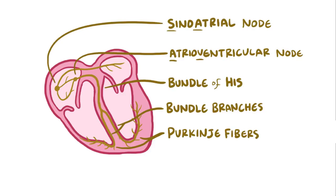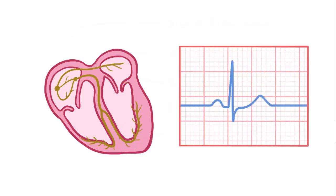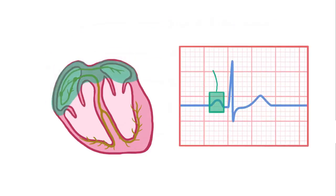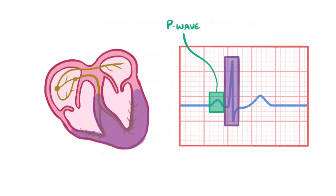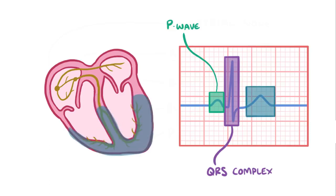So in a healthy heart, the upper chambers contract first, then shortly after the lower chambers contract. On an ECG, the atrial depolarization and contraction is seen as a P wave, the ventricular depolarization and contraction is seen as a QRS complex, and the ventricular repolarization and therefore its relaxation is seen as a T wave.